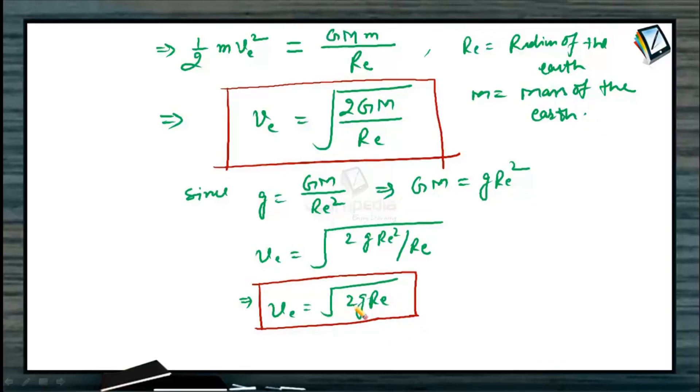Let us calculate this velocity V_E. V_E equals to root over 2g, suppose it to be 10, R_E radius of earth suppose it to be 6400 into 10 raised to 3. After calculating this, we will be getting this to be 11.2 km per second. So if this much velocity is provided to a particular body, it will escape the gravitational pull of earth.